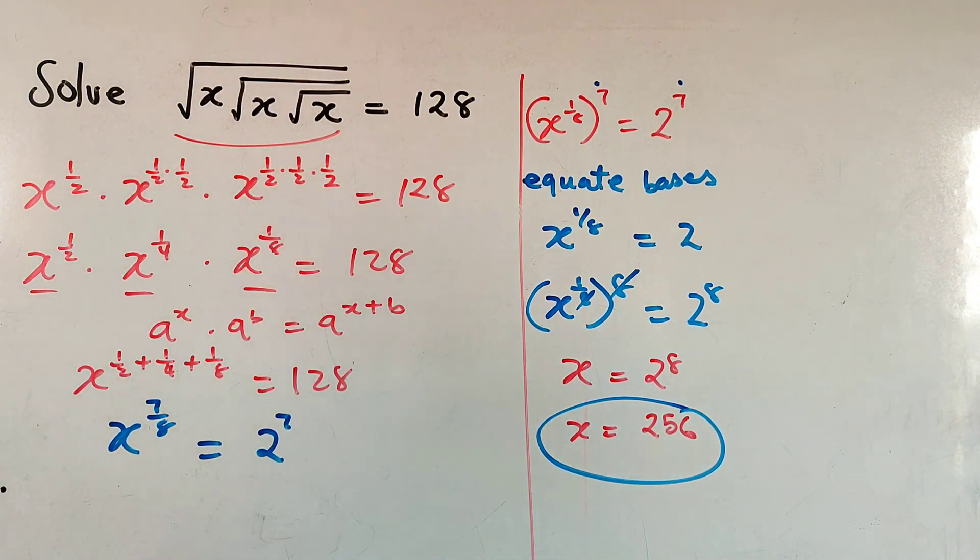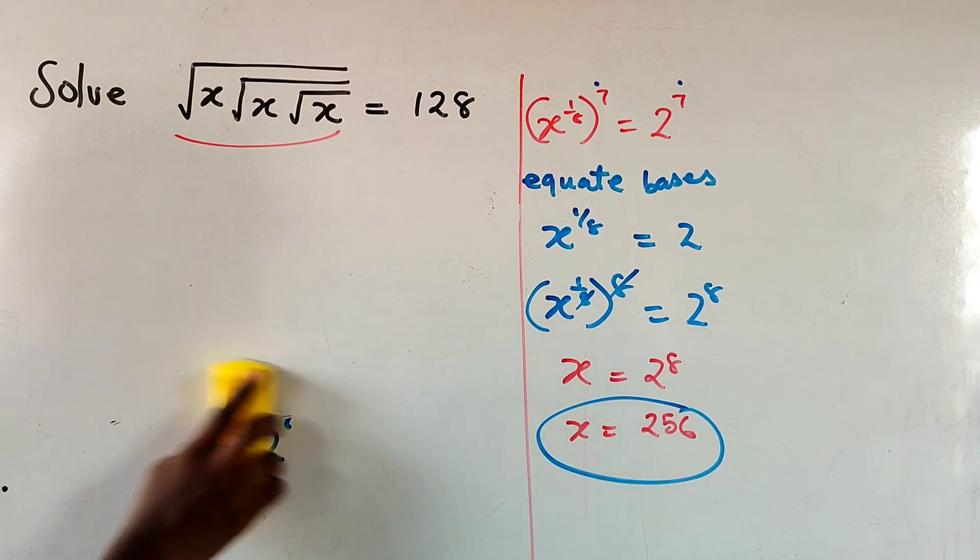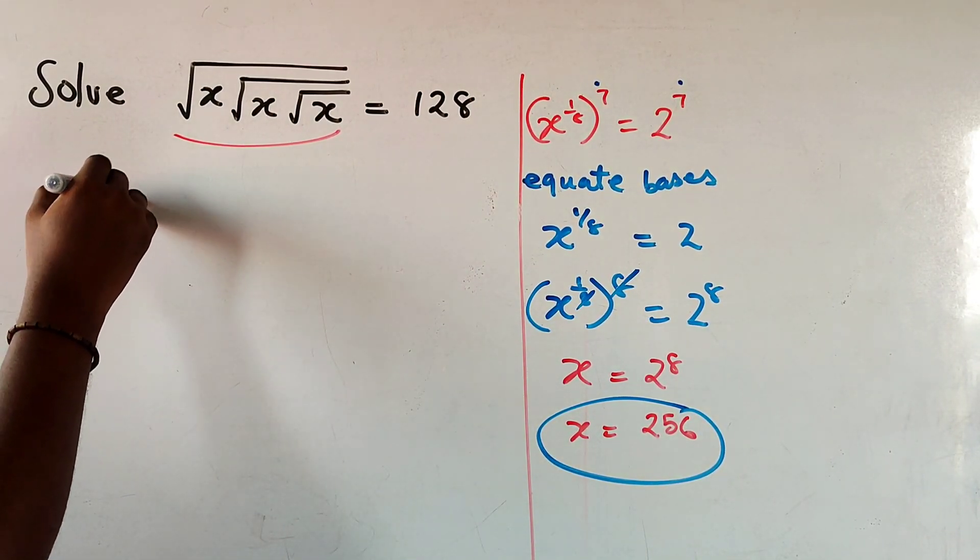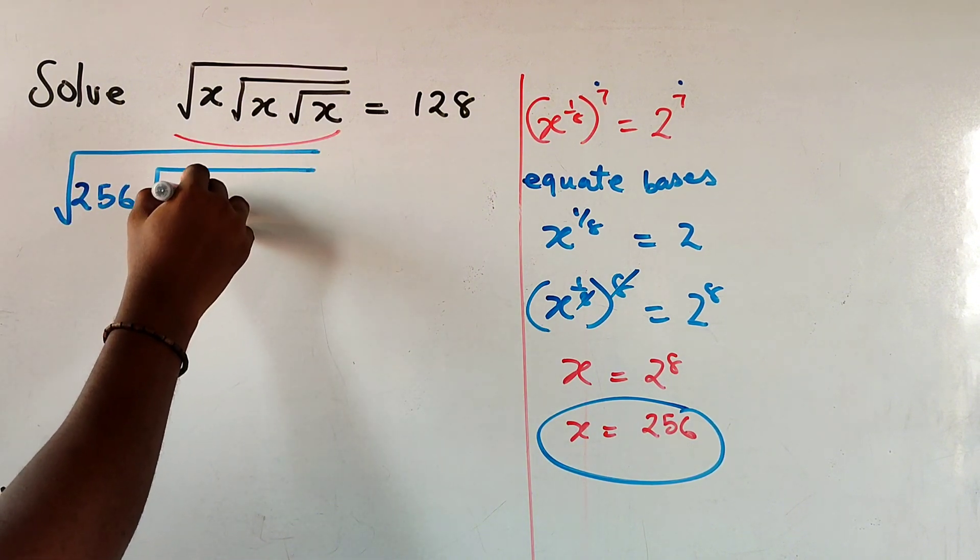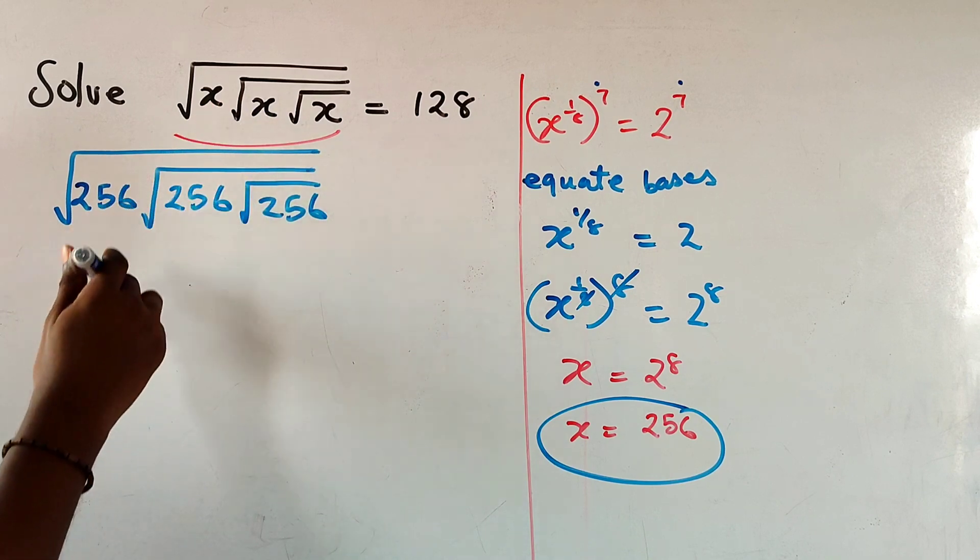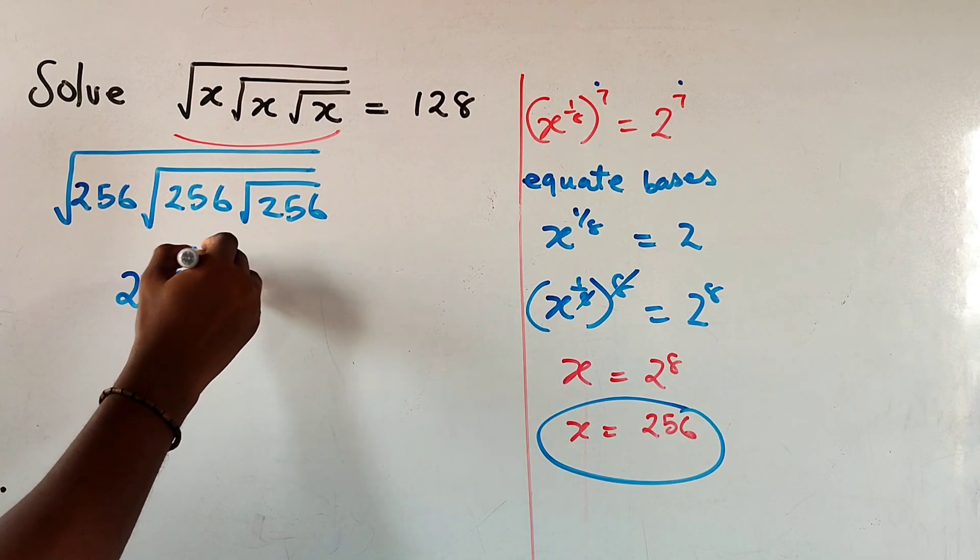So to check this, let me show you how you check if this is correct. In check, it's pretty simple. So you know your x is 256, right? So this is 256 and this is 256, 256. Remember what we did with the x here? So we could write this whole thing as 256 to the power of 7 over 8.